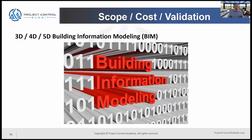All of these relationships between individual components in the database are maintained. A change to the model in one area is propagated throughout the digital database to all other affected components. Rules and design intent can be established in the model — for example, specifying that a door must be one meter away from a window, or that a piping flow meter must be five meters from a change in direction on that piping line. So BIM models start becoming many things to many people.